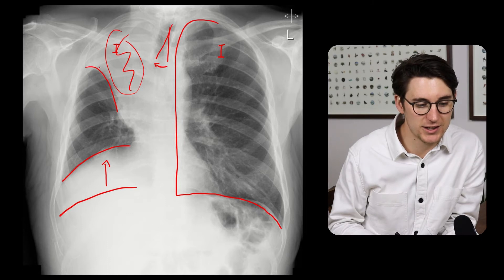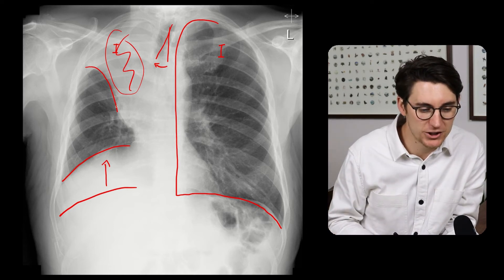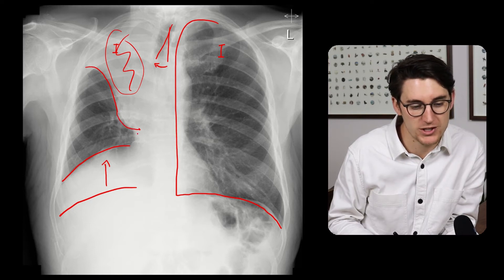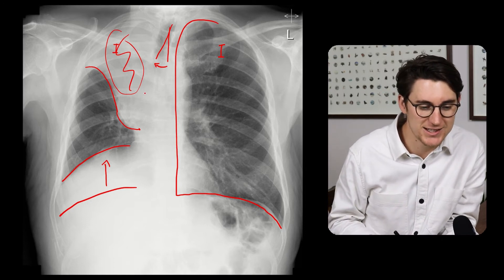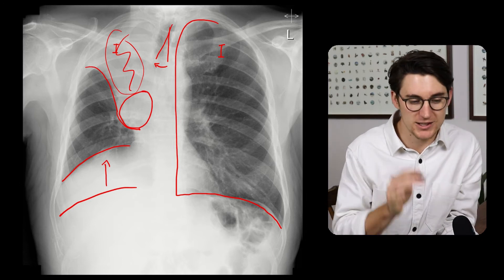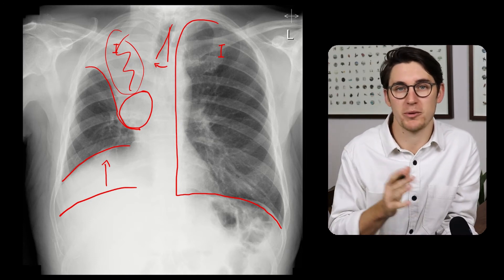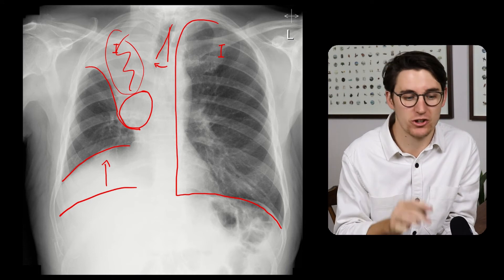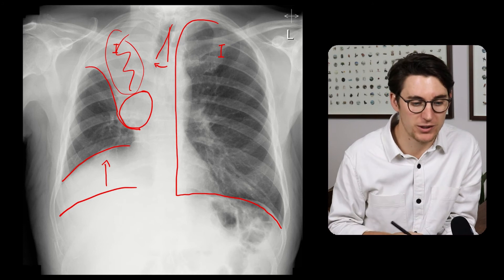We can see here that this concave shape to the horizontal fissure, with that pulling up and volume loss in the right upper lobe, reaches an inflection point and then becomes convex. This is the S that we are looking for — the reverse S-sign of Golden, or the Golden S-sign. What it suggests is that there is a central obstructing mass causing this right upper lobe collapse, and this feature raises our index of suspicion for a primary bronchogenic carcinoma — a sinister feature indicating a potential primary neoplasm within the lung.